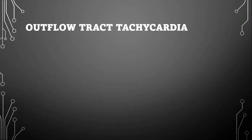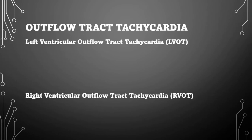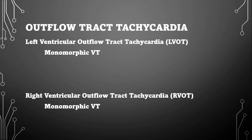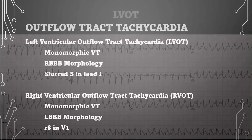Now let's talk about our two outflow tract tachycardias. We have left ventricular outflow tract tachycardia (LVOT) and right ventricular outflow tract tachycardia (RVOT). LVOT has a right bundle branch morphology and a slurred S-wave in lead 1. Right ventricular outflow tract tachycardia has a left bundle branch morphology and an RS in V1.